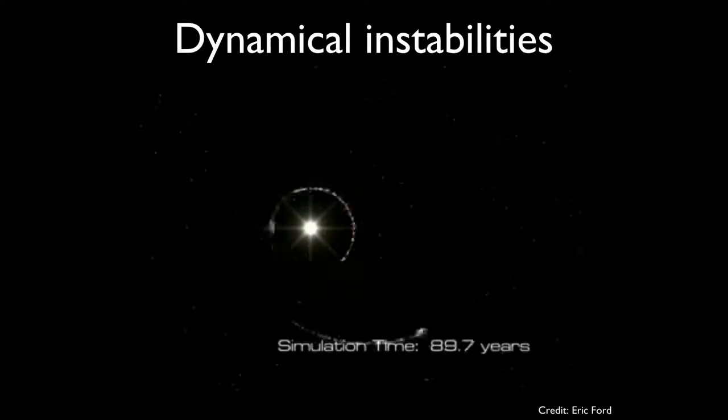And the surviving planet's orbit is no longer a nice circle, instead it's stretched out, it's an ellipse, it's an eccentric orbit.